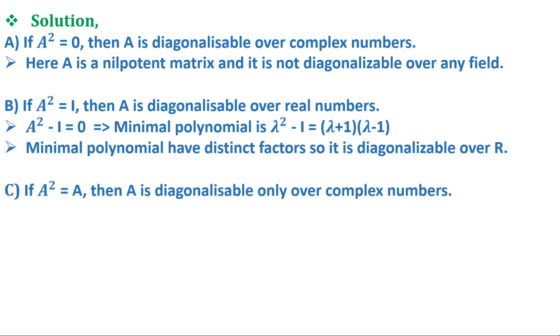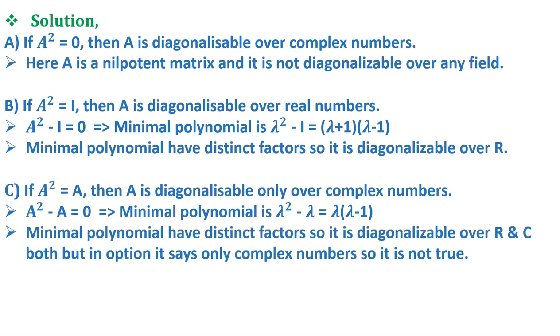Option C says if A² = A, then A is diagonalizable only over complex numbers. Here we get minimal polynomial equals λ² - λ, which equals λ(λ - 1). Here also the minimal polynomial has distinct factors so it is diagonalizable over R and C both, but in the option it says only over complex numbers, so it is not true. Therefore the correct answer is option B.